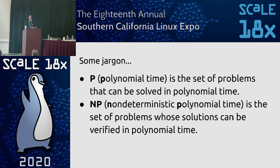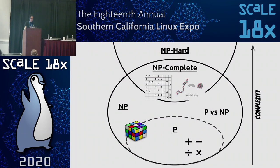So let's introduce some jargon. P represents polynomial time — the set of problems that can be solved in polynomial time. NP represents non-deterministic polynomial time — the set of problems whose solutions can be verified in polynomial time. Examples of P problems include solving a 3x3 Rubik's cube and arithmetic operations.